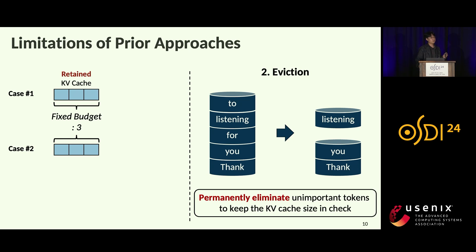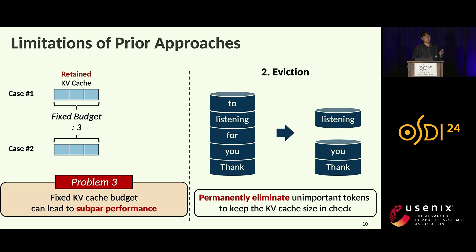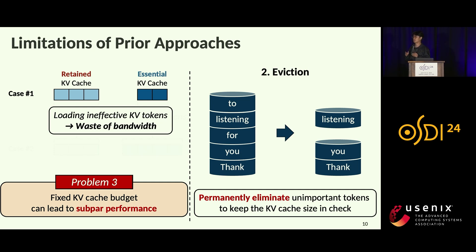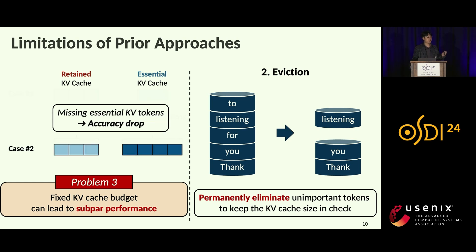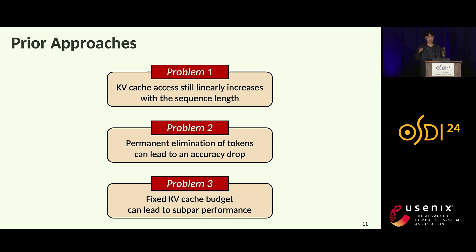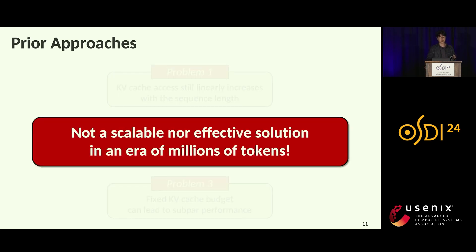Eviction-based approaches also use a fixed KV cache size budget across layers and queries. Assuming a budget of three, this fixed budget leads to subpar performance since the number of important tokens changes dynamically — for example, two in one case and four in another. If it accesses more than essential, memory bandwidth is wasted on ineffective tokens. If it accesses less than essential, accuracy drops due to missing tokens. Thus, prior approaches are neither scalable nor effective in an era of millions of tokens.